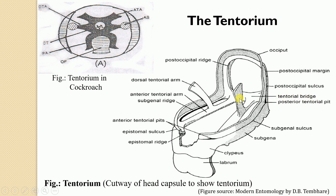The tentorium serves to provide attachment to the ventral muscles of the mouthparts and also supports the lower end of the cranial wall. The antennal muscles also arise from the tentorium. When the dorsal tentorial arms are present, the muscles from the antenna are innervated into the dorsal tentorial arm; when dorsal tentorial arms are absent, the anterior tentorial arms serve as the point where the antennal muscles are lodged.